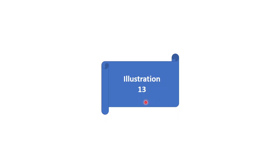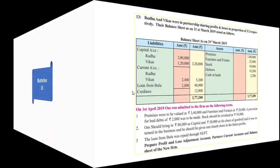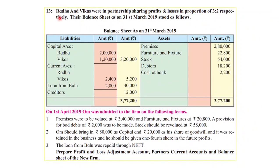Hello students, now let's start with the next question, illustration number 13. Radha and Vikas were in partnership sharing profits and losses in the proportion of 3 to 2 respectively. Their balance sheet as on 31st March 2019 stood as follows.